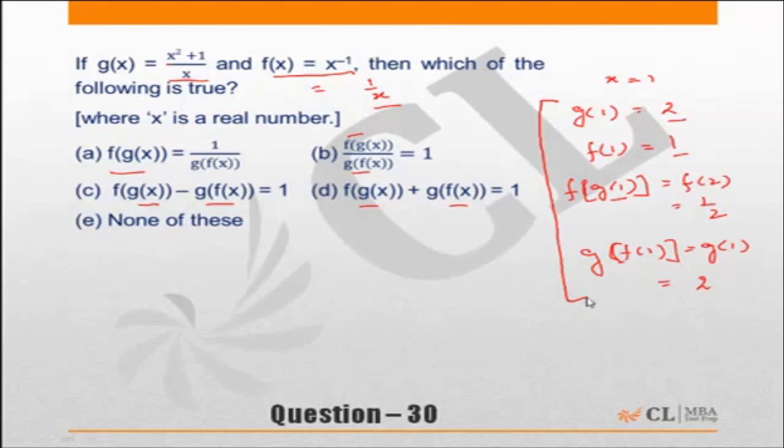Now use these values to solve the equation. Let's start checking the choices. Choice A: f of g(x)—and remember I have taken x to be equal to 1—so f of g(1), f of g(1) is equal to 1 by 2. Choice A, left-hand side is 1 by 2.